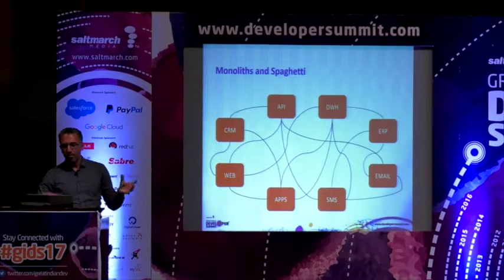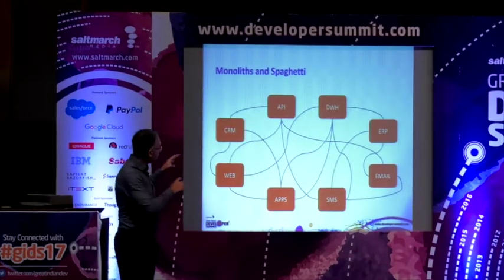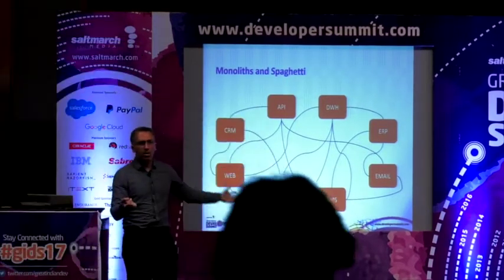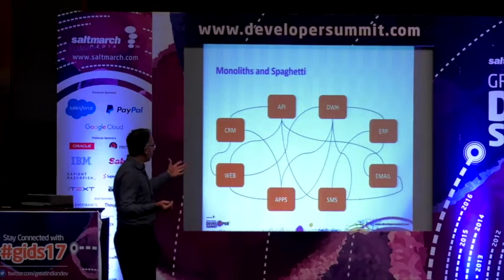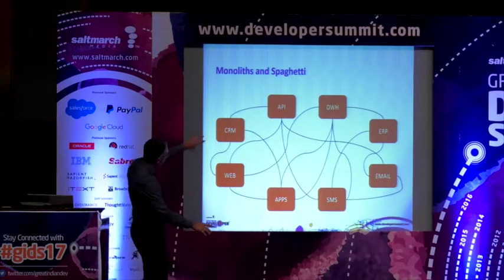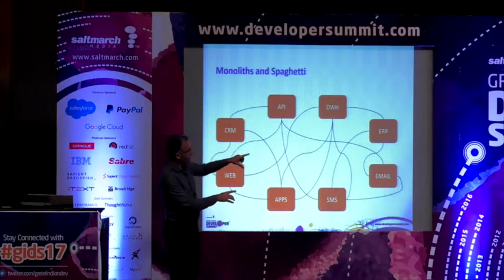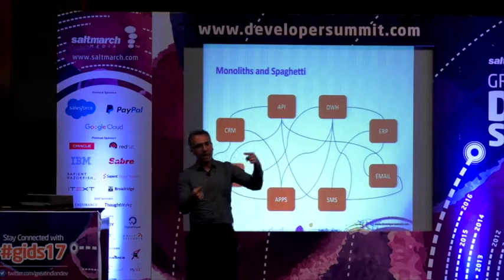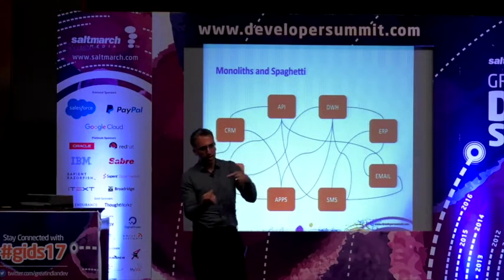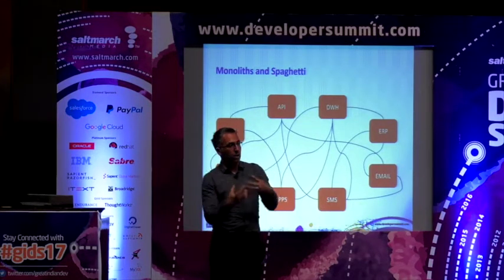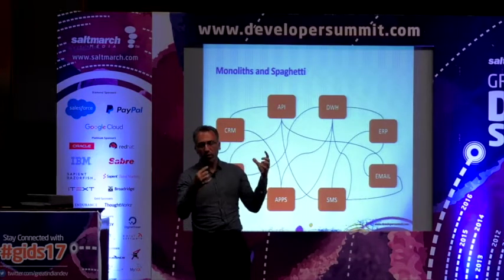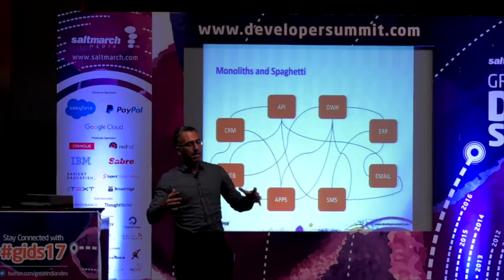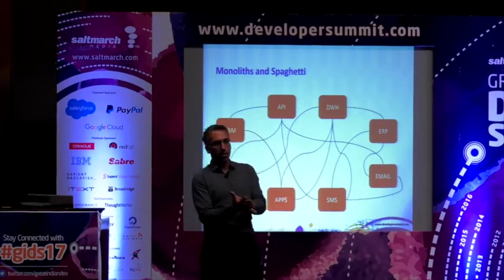It starts getting extremely convoluted. All the different applications talk to each other through point-to-point connections. The challenge is that any of these integration points are a potential point of weakness. If the connection fails, you fail the integration. You also need to secure them — each and every single point of integration is a vulnerability, a backdoor into your system.